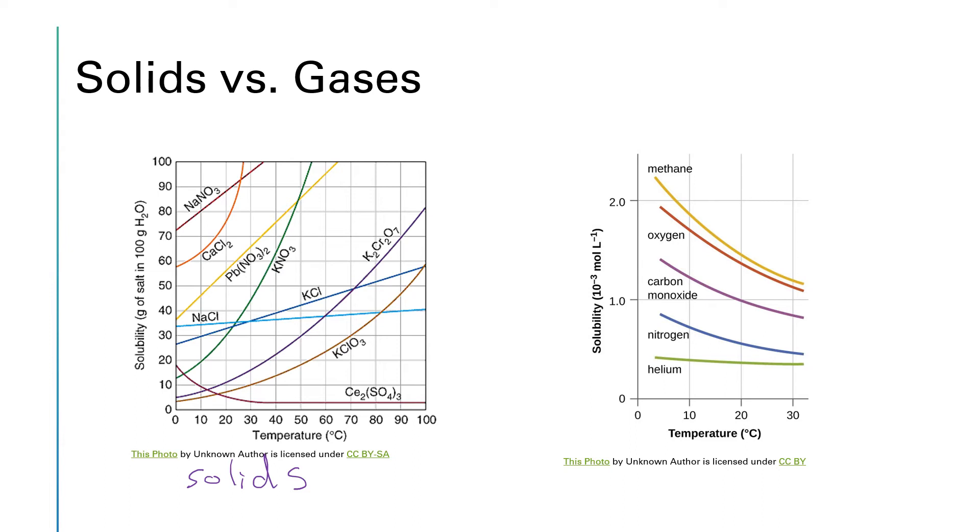However, there are a few compounds such as cerium 3 sulfate, which is down here, which buck the trend, and the solubility actually decreases as the temperature increases. But those compounds are kind of rare. Generally speaking, if we are talking solids, the trend for solids, for solubility versus temperature, is that the solubility goes up. Now that's not 100%, but that is the overall trend.